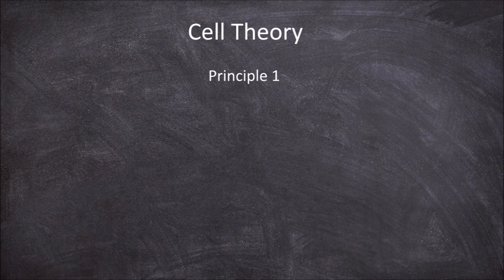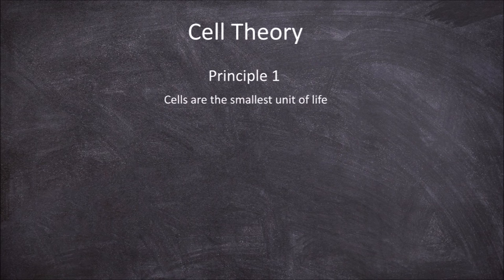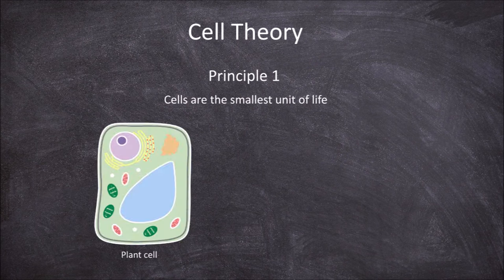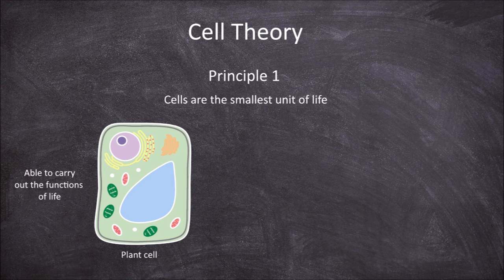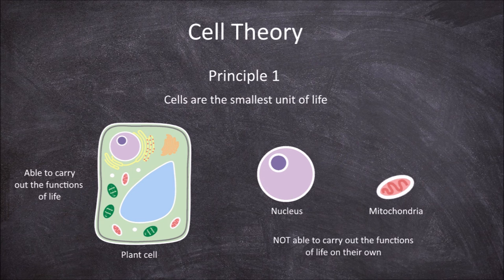The first principle is that cells are the smallest units of life. If we went smaller and looked at just an organelle within a cell, such as the nucleus or mitochondria, they are not capable of the processes required for life alone. They cannot exist on their own and must work together within the cell, making the cell the smallest unit of life.